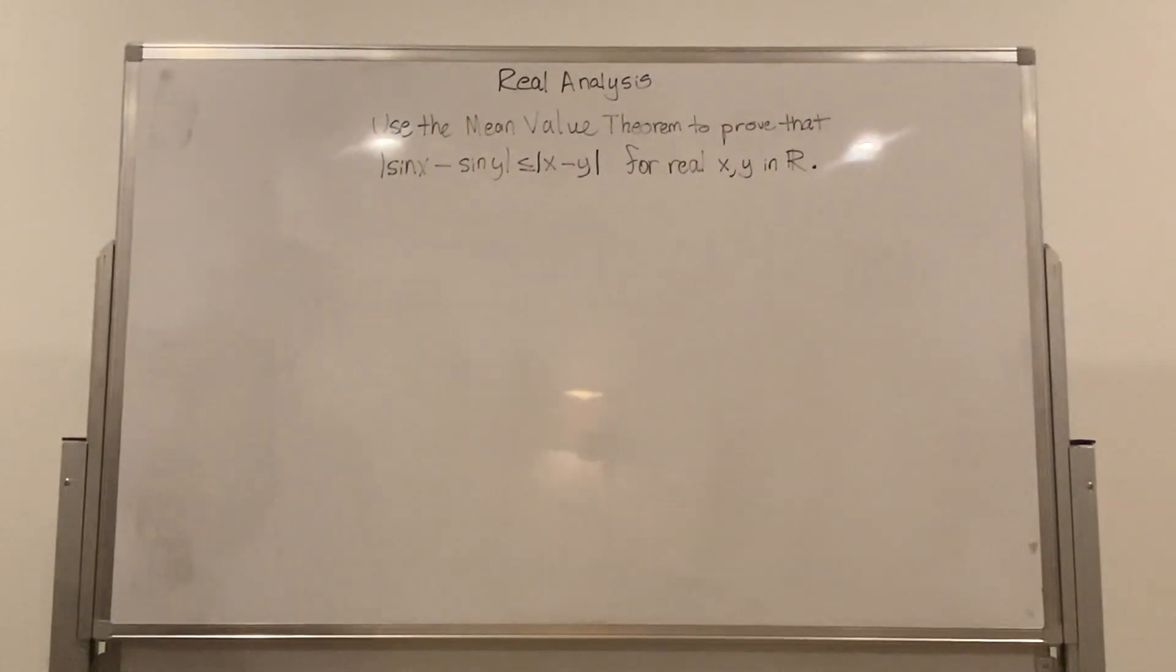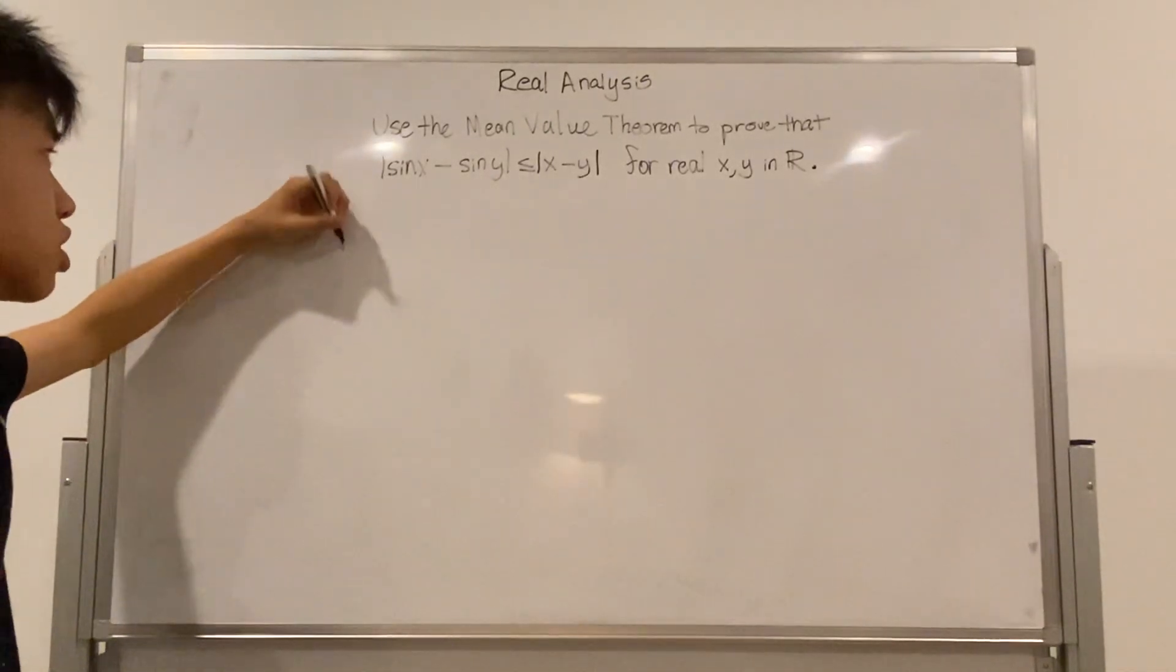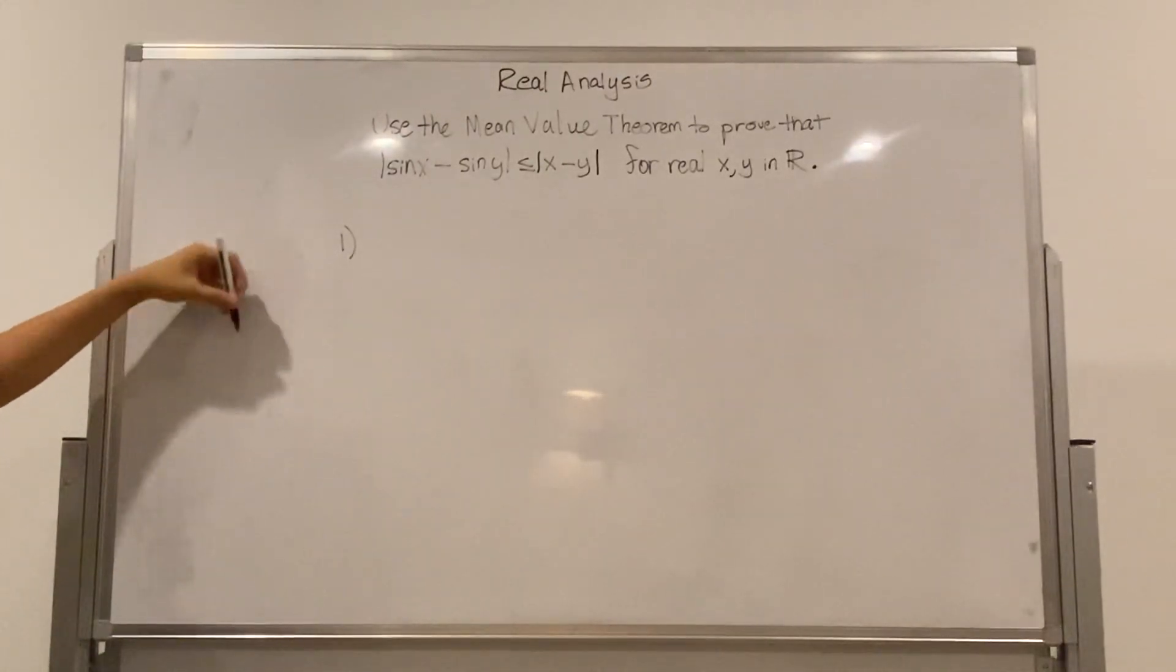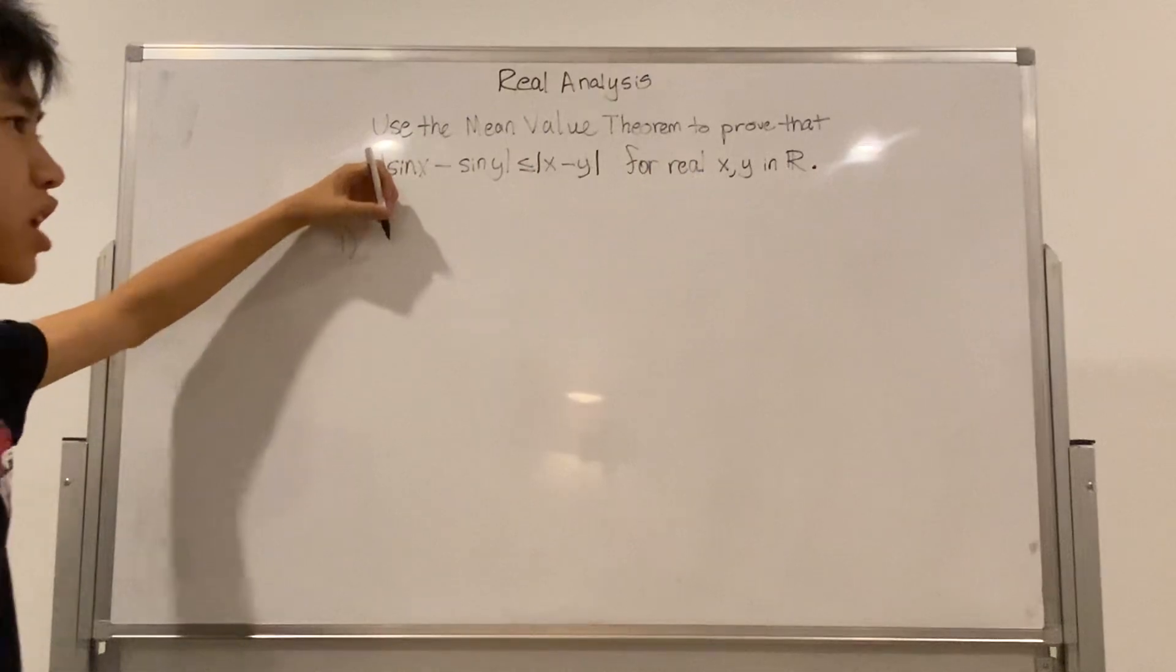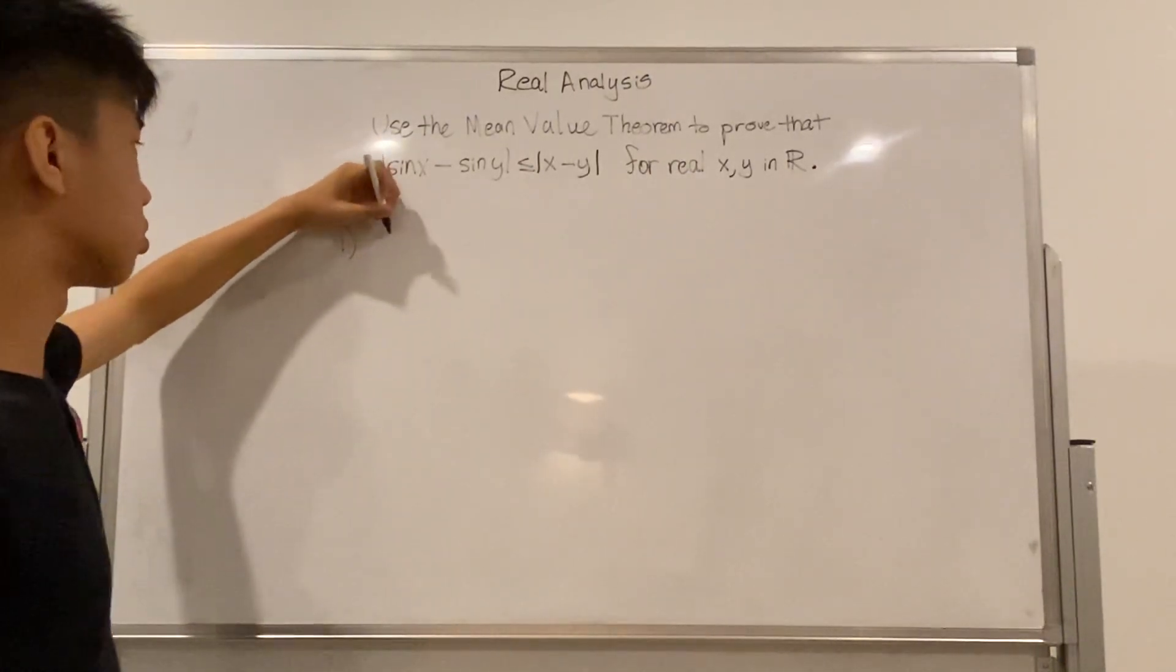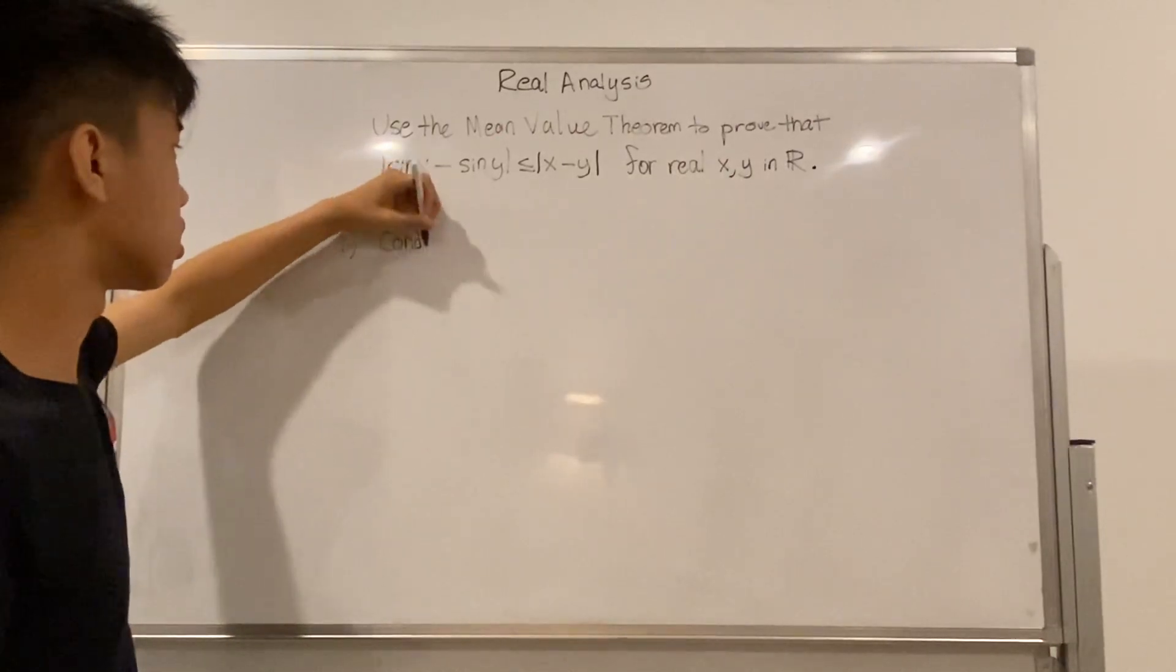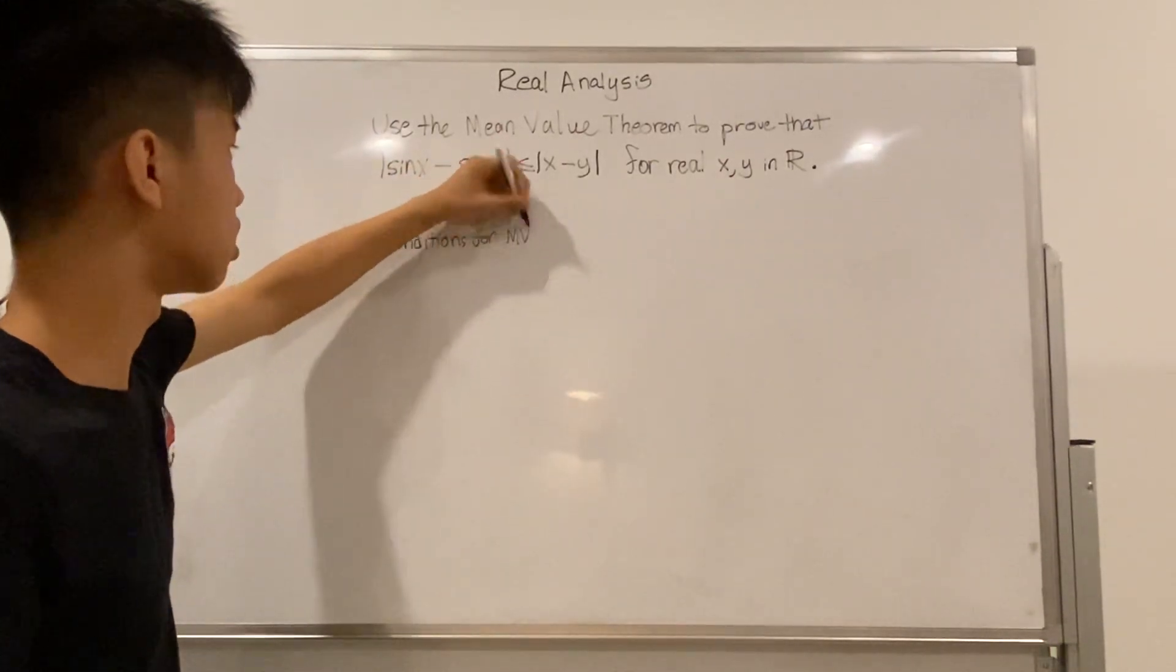So first, before we do anything, we need to establish two conditions. In order for the mean value theorem to be satisfied, we have to have two conditions. So conditions for MVT.